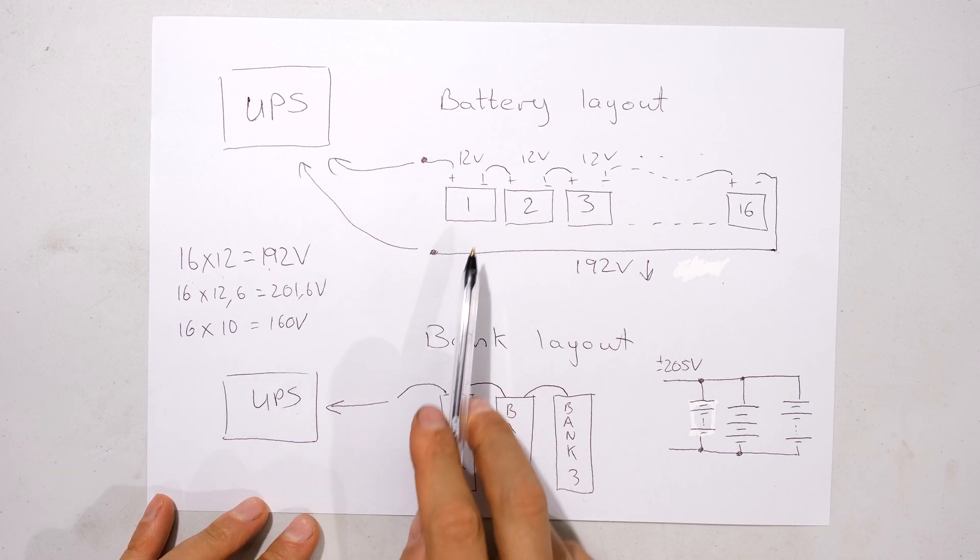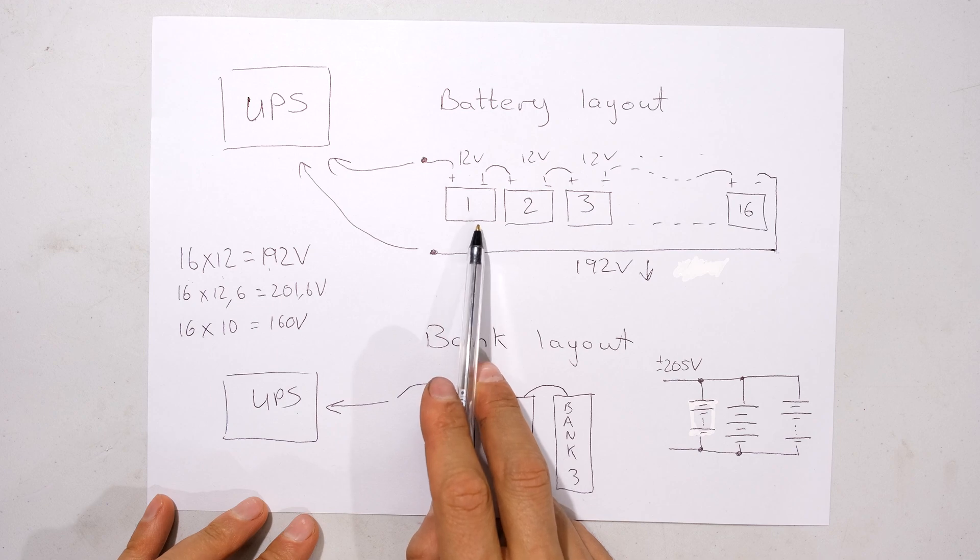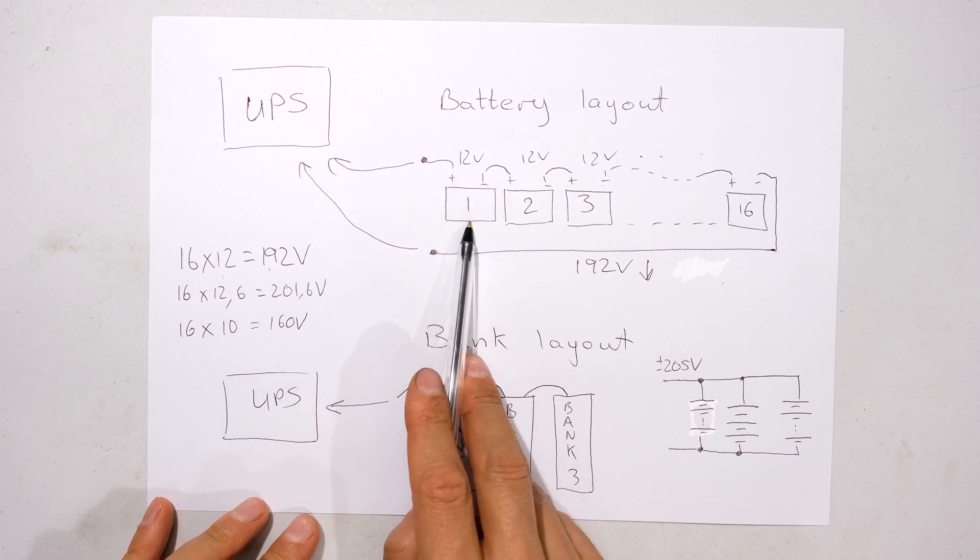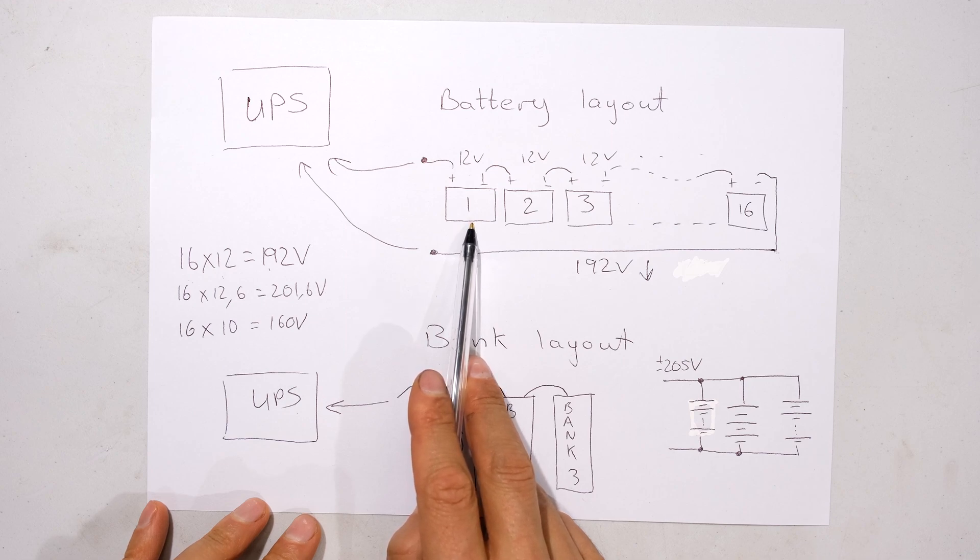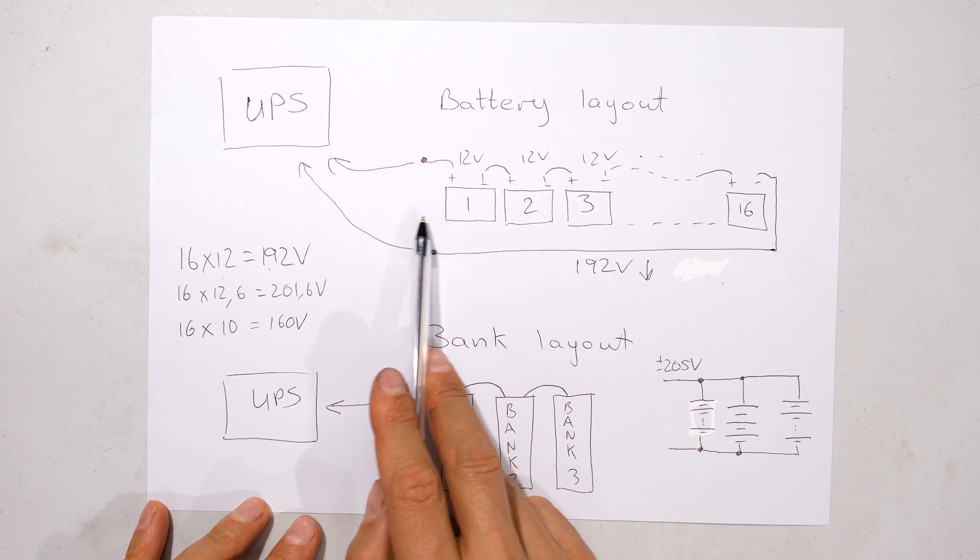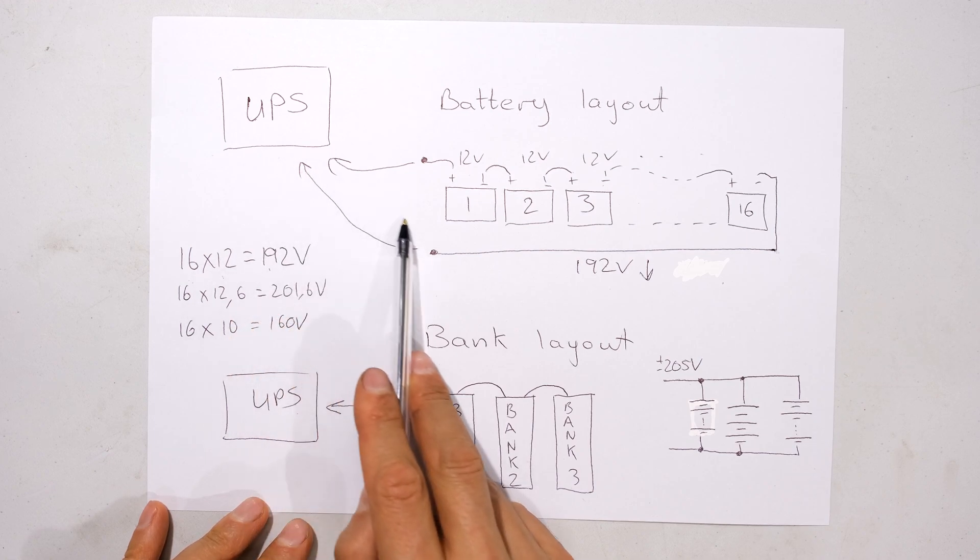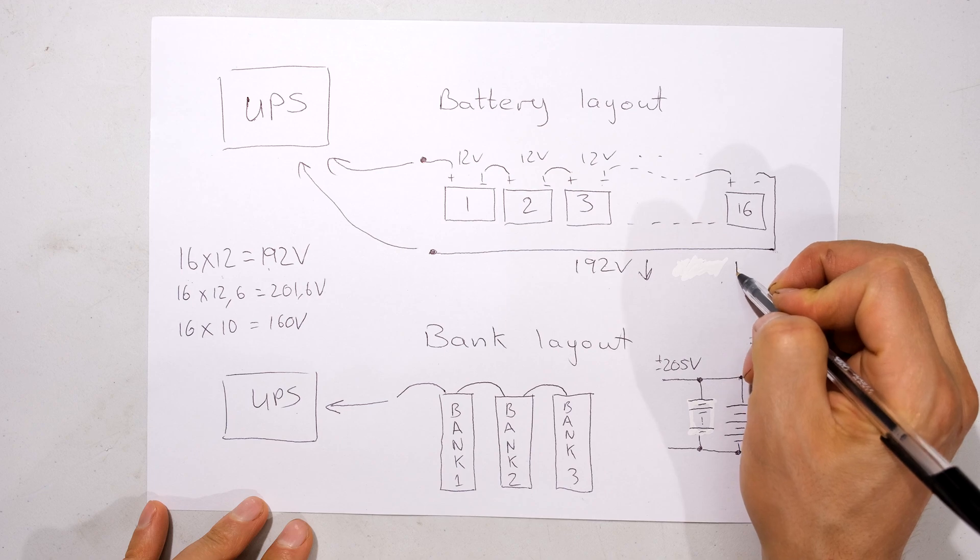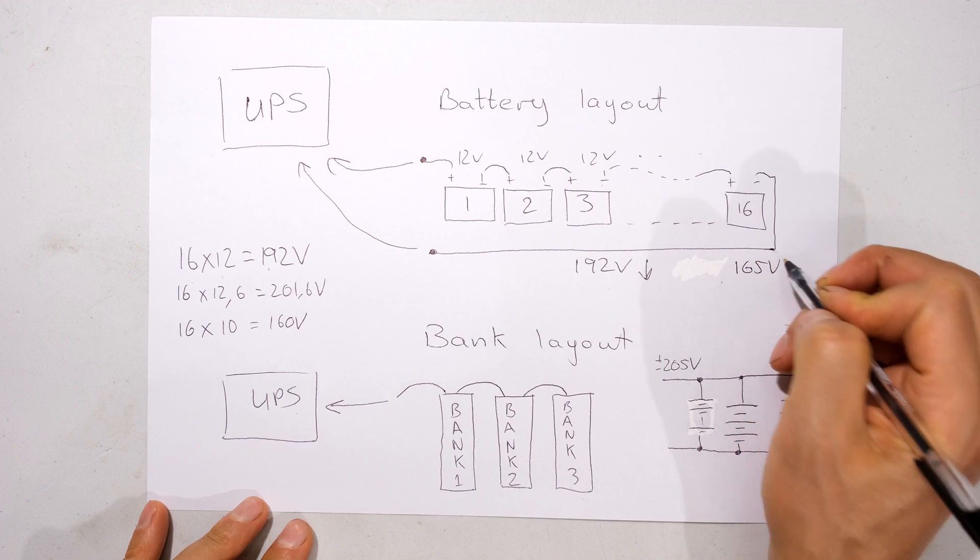As you're using the UPS on batteries this voltage will slowly reduce as these lead acid batteries discharge. But the thing about lead acid batteries is they're pretty good at maintaining their voltage. For example, 12 volts - even if you load the lead acid battery significantly it shouldn't go below 10 volts.